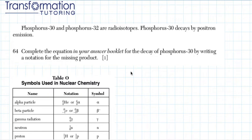Phosphorus-30 and Phosphorus-32 are radioisotopes. Phosphorus-30 decays by positron emission. Complete the equation in your answer booklet for the decay of Phosphorus-30 by writing a notation for the missing product.